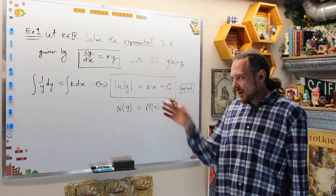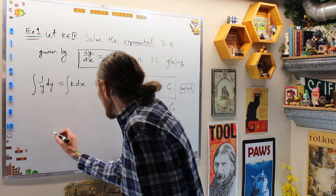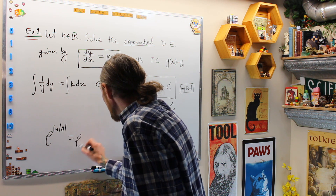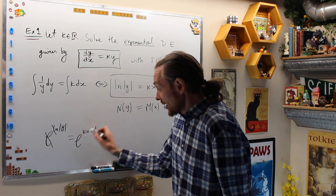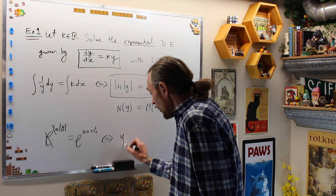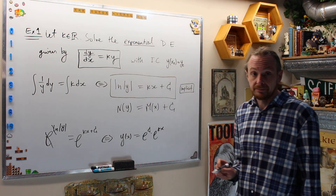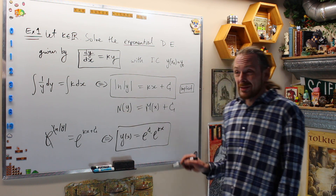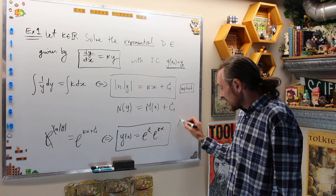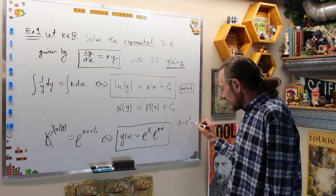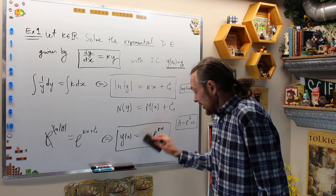Because logarithm and exponential are inverses, we can exponentiate both sides to get an explicit solution for y. Doing that: e to the ln|y| equals e to the (kx + C). The e and logarithm cancel, and using exponential laws, y(x) = e^C times e^(kx). For simplicity, let a = e^C, which is any positive real number, so y(x) = a·e^(kx).